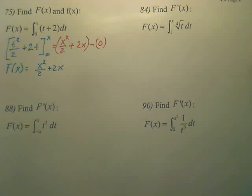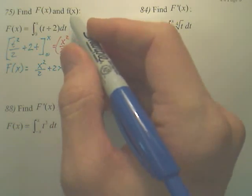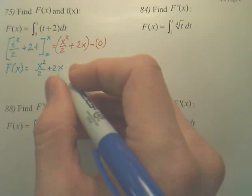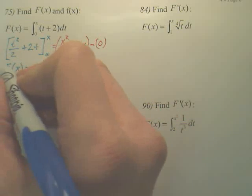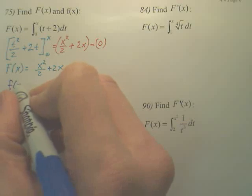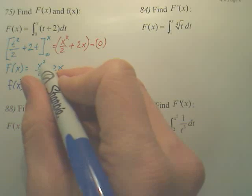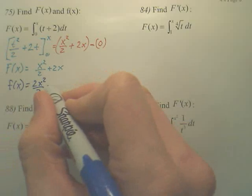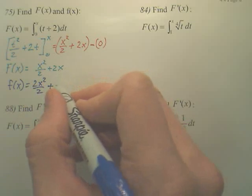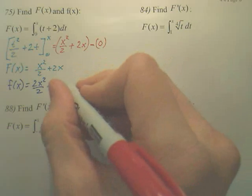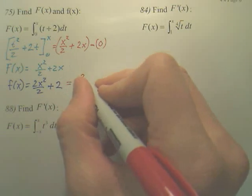Now, from there, I want to find lowercase f, which basically means derive this. So when I derive this, if I were to derive this, f(x), I'm going to derive this, put the power up front, would be 2x squared over 2 plus the derivative of 2x is just 2.